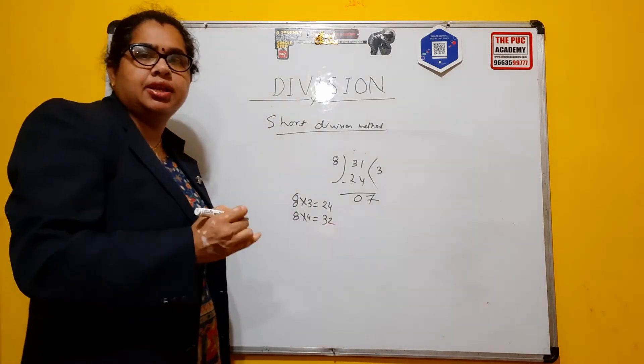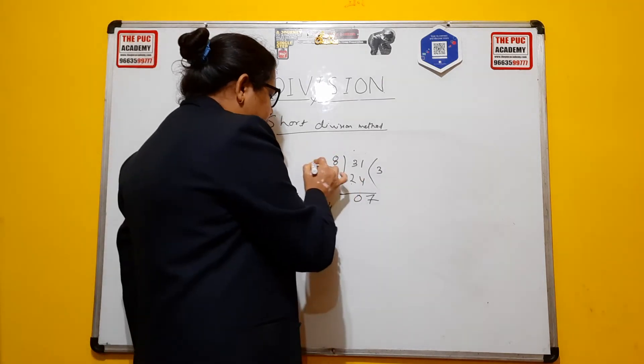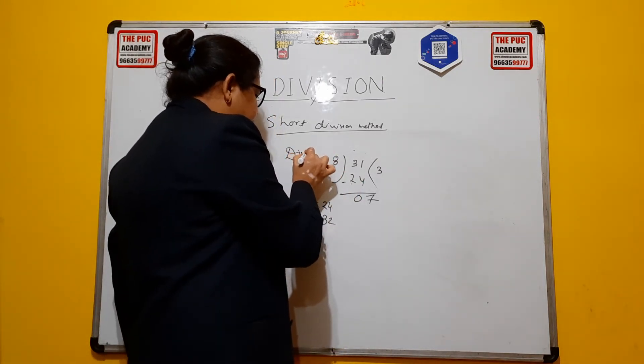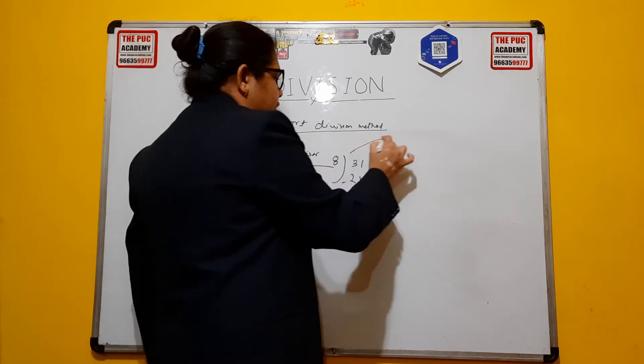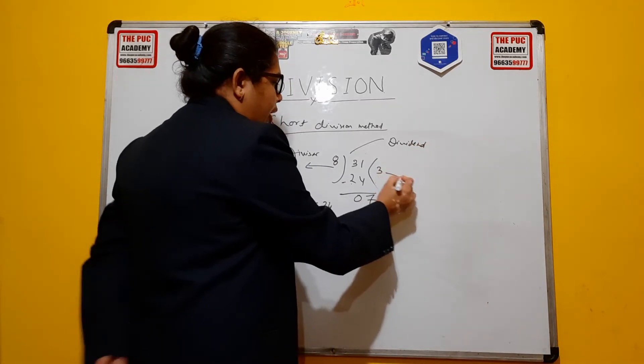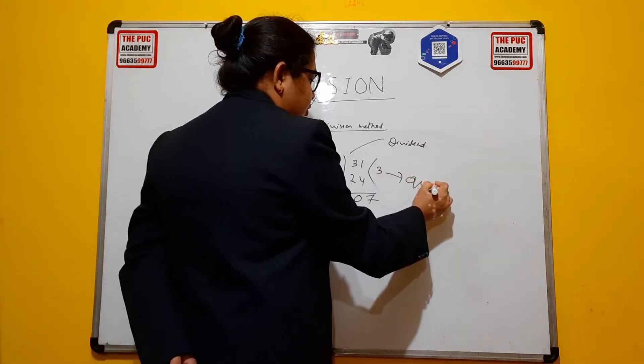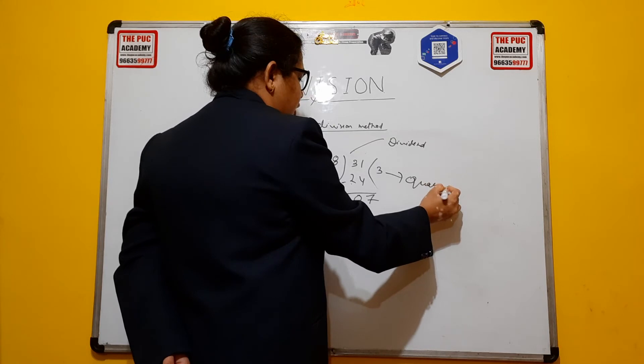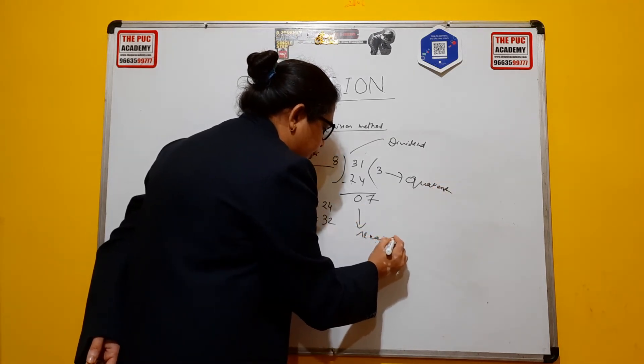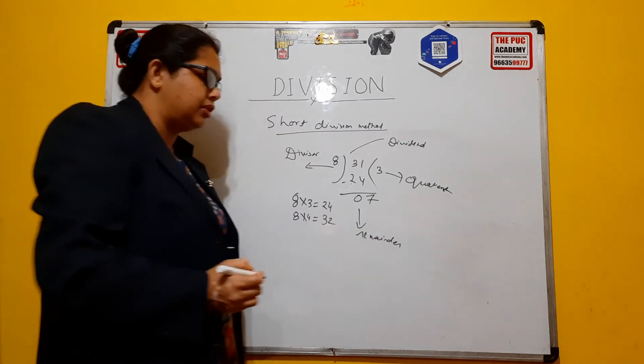So remainder here is 7. So your divisor is 8, dividend is 31, and quotient is 3 now, and remainder is 7.